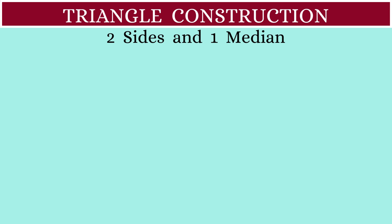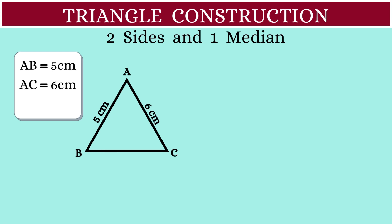For example, let's say we are asked to construct a triangle ABC where AB is 5 cm, AC is 6 cm, and the median AD is 4 cm.